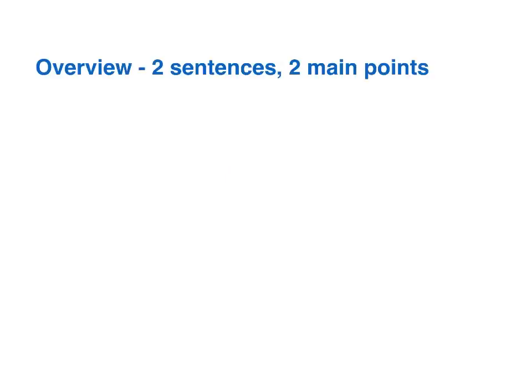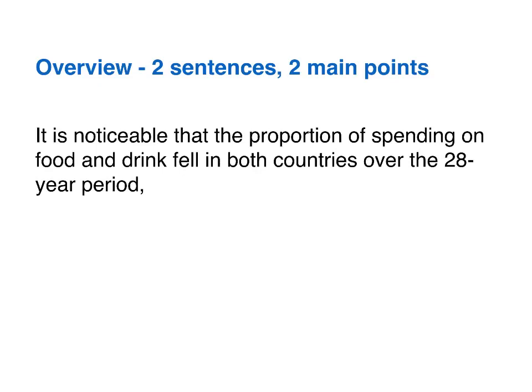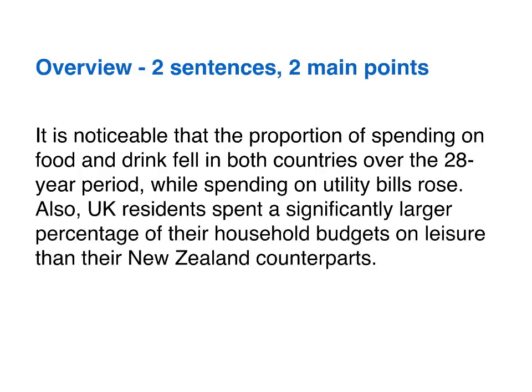Here's how I wrote the overview: 'It is noticeable that the proportion of spending on food and drink fell in both countries over the 28-year period, while spending on utility bills rose.' Those are the two similarities. Second sentence: 'Also, UK residents spent a significantly larger percentage of their household budgets on leisure than their New Zealand counterparts.' That's the big difference — leisure spending. Notice no numbers are mentioned in the overview. We'll come on to the numbers next.